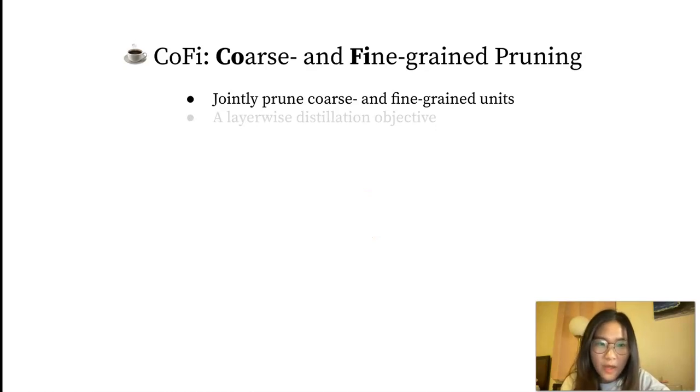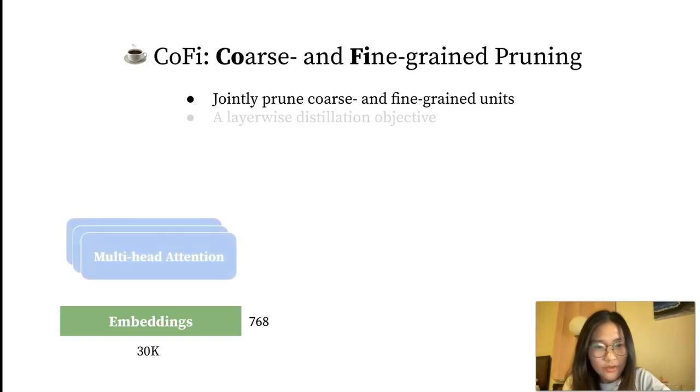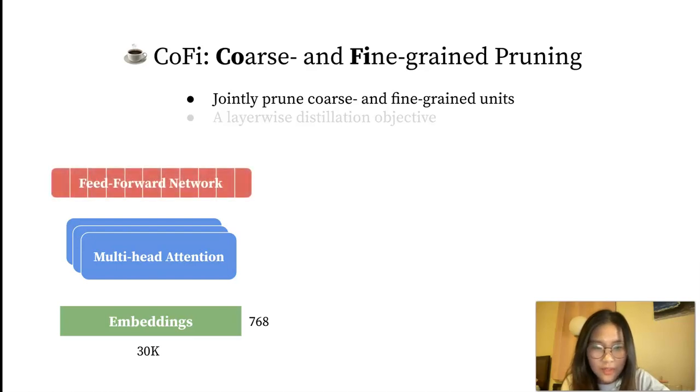So we start from a BERT-based model structure. The model has an embedding matrix of a size 30,000 by 768, where 30,000 is the vocabulary size and 768 is the hidden size. Besides the embedding matrix, the model also contains 12 transformer blocks with each block consisting of a multi-head attention network and a feed-forward network.